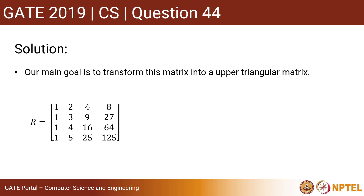Consider this matrix. We can see the first column has all ones. To convert this matrix into an upper triangular matrix, if we subtract row 2 from row 1 we get a 0 there, if we subtract row 3 from row 2 we get a 0 there, and if we subtract row 4 from row 3 we get a 0 there.